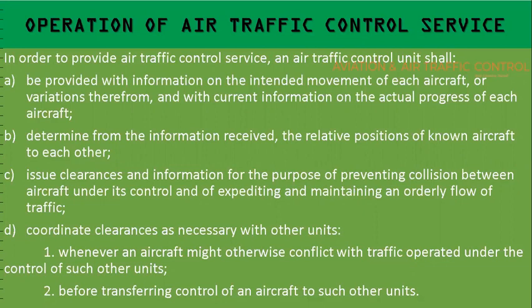In order to provide air traffic control service, an ATC unit shall be provided with information on the intended movement of each aircraft or variations thereof, and with current information on the actual progress of each aircraft. This means they should have the flight plan, estimates, and any changes such as level changes or estimate changes.